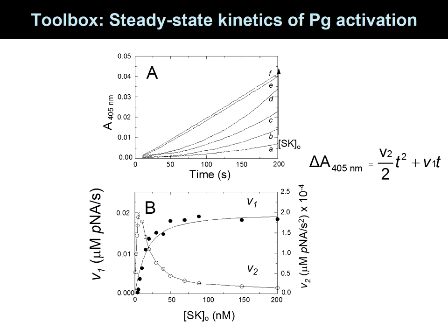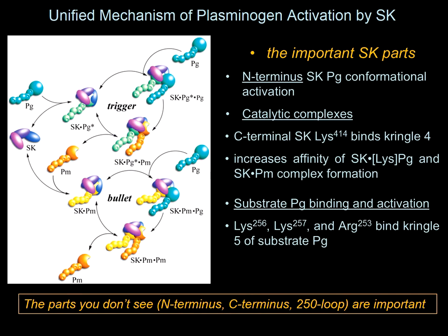After a lot of kinetics experiments, we came up with what we call a unified mechanism of plasminogen activation. Starting in the upper left, SK binds to free plasminogen and conformationally activates it in the SK-PG* complex. There are two catalytic cycles in our mechanism: a trigger cycle, which I'm just starting on, and a second cycle called the bullet cycle.